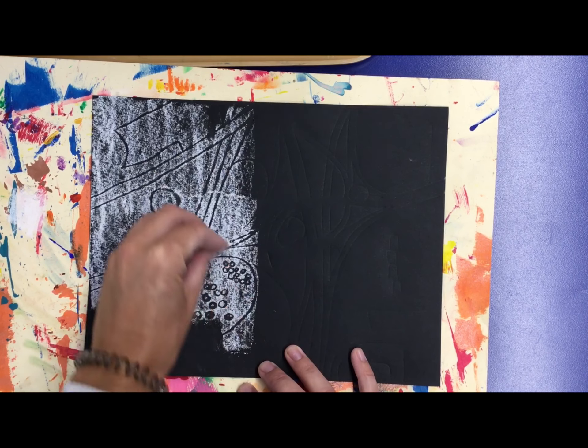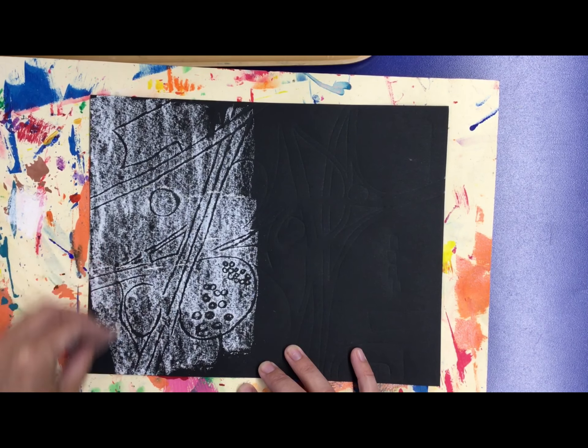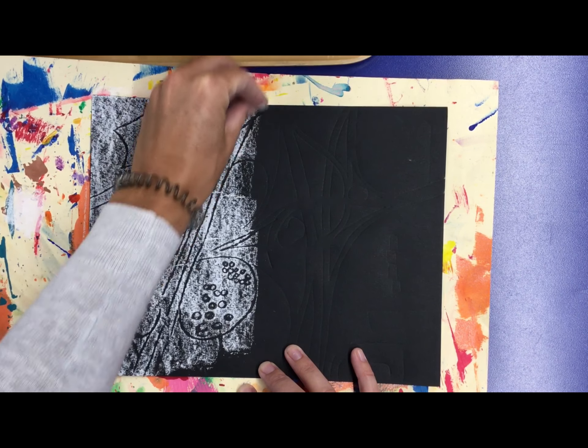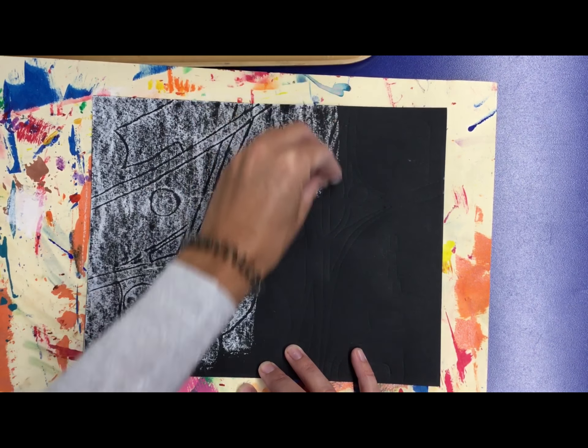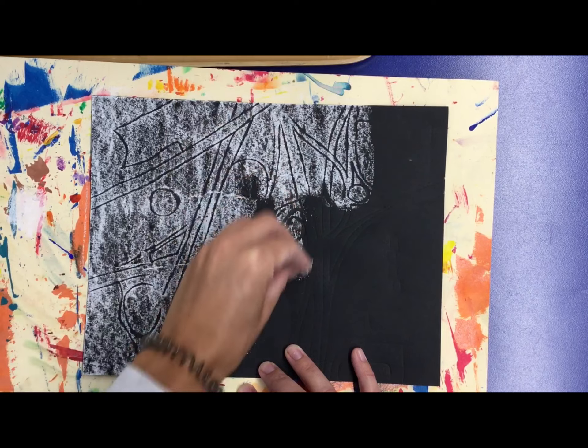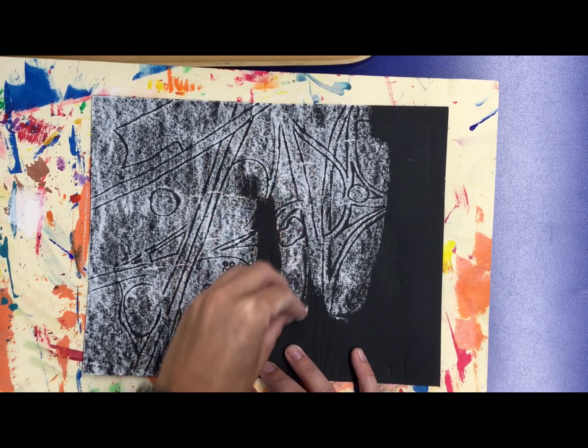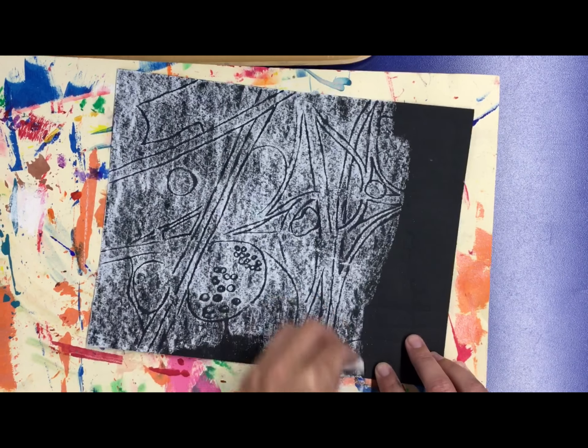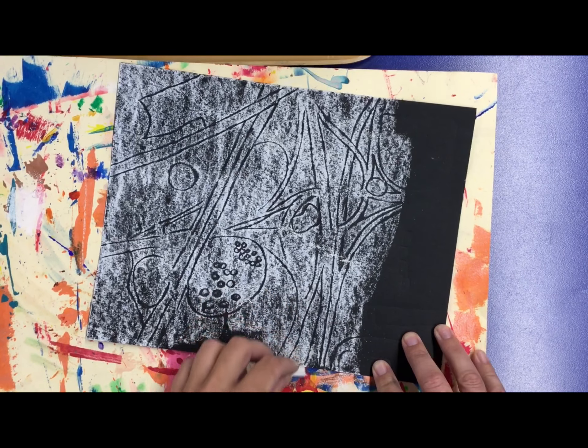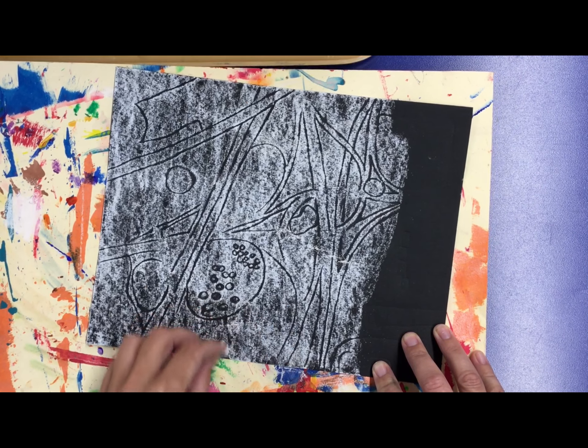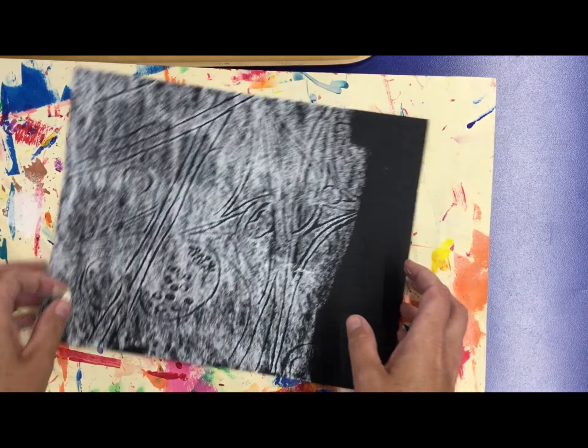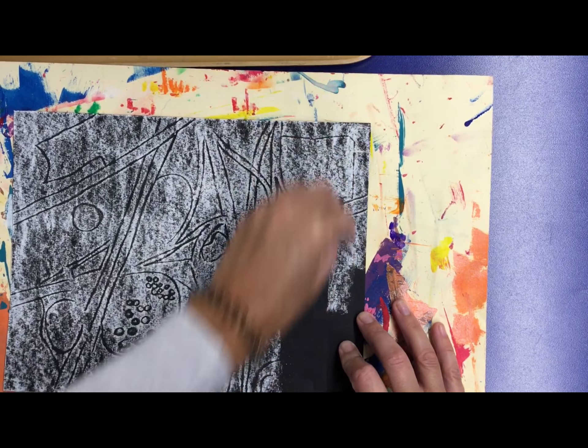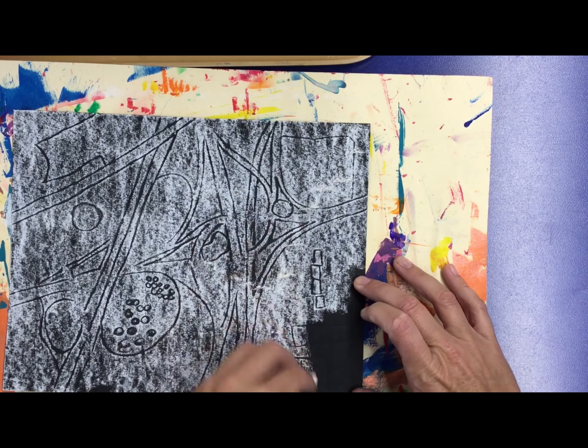I'm not pushing too hard, but what we want to have happen is the whole surface is covered with the white pastel in a nice even layer. Once you get to the end of covering your design, you can lay or pick up the piece of paper.